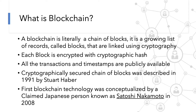Let's look into a little history about blockchain. The first work on cryptographically secured chains of blocks was described in 1991 by Stuart Haber. But the first blockchain technology was conceptualized by a claimed Japanese person known as Satoshi Nakamoto in 2008. Nakamoto improved the design in an important way, using a hash cache-like method to timestamp blocks without requiring them to be signed by a trusted party.